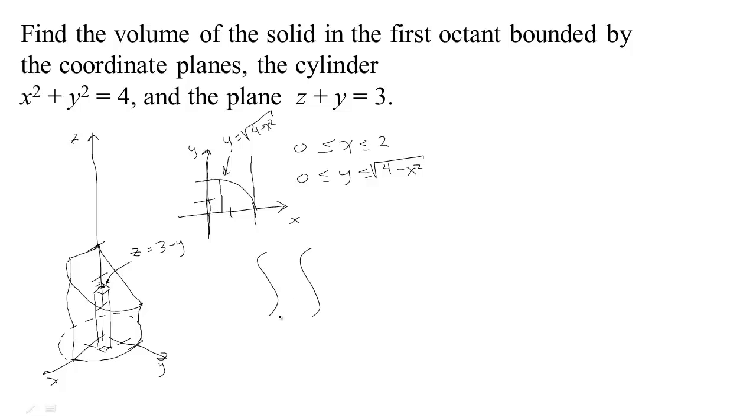Now the constant bounds need to be on the outside, x going from 0 to 2, and then what I'm integrating, y is going from 0 to square root of 4 minus x squared, and what I'm integrating, the height is z, which is always given by 3 minus y, so I just need to integrate this with respect to y and then integrate with respect to x.